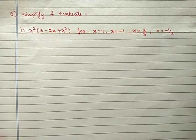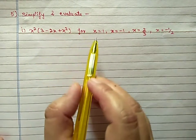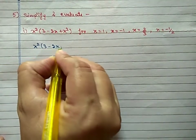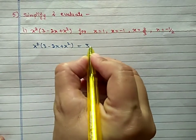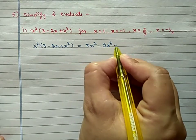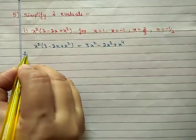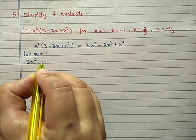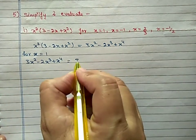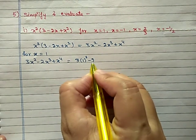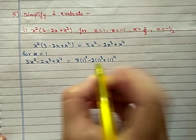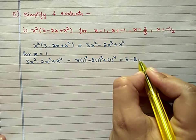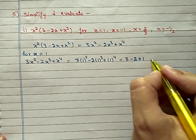Question number 5: Simplify and evaluate. First multiply x² into (3 − 2x + x²). Multiplying gives 3x² − 2x³ + x⁴. Now substitute x = 1: 3(1)² − 2(1)³ + (1)⁴ = 3 − 2 + 1 = 2. Note that 1 raised to any power is always 1.